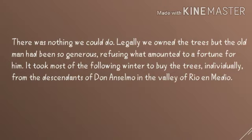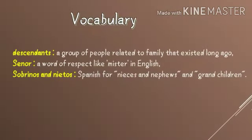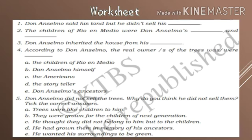We have come to the end of the chapter. It is a very simple chapter — an actual case which happened. Here are certain vocabularies to learn: 'descendants' means a group of people related to a family that existed long ago; 'señor' is a word of respect like 'mister' in English; 'sobrinos and nietos' is Spanish for nieces, nephews, and grandchildren.